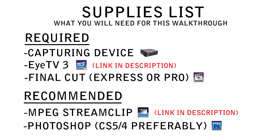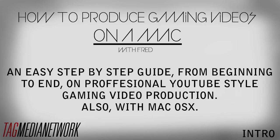Now that you have your full supplies list, get your hands on that stuff before you continue watching this series or before the next video comes out. Just so that you have everything you need once it comes into play. That's the end of my intro to my series on how to produce gaming videos on a Mac. At the end of each video, I'm going to have annotations to head to the next video or the last video. So click that once it's live and head to the next step in this endeavor to start producing your first YouTube gaming video on a Mac.